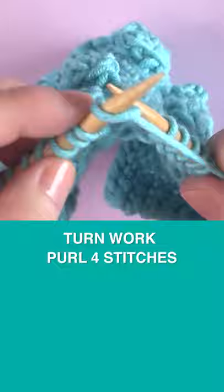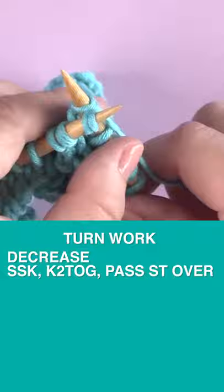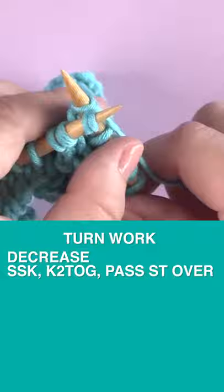Now finishing up we turn our work to the right side and decrease with SSK slip slip knit and then knitting two together and we're going to pass that slip slip knit stitch over the K2 together.